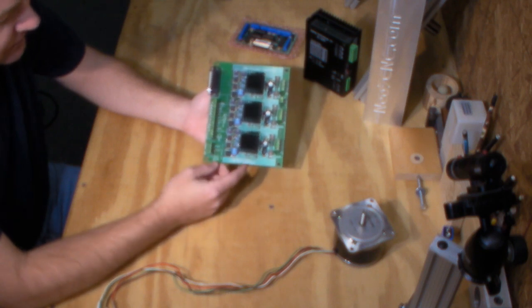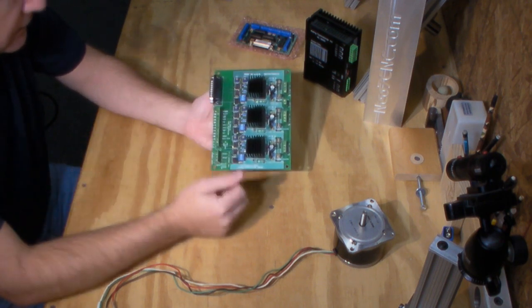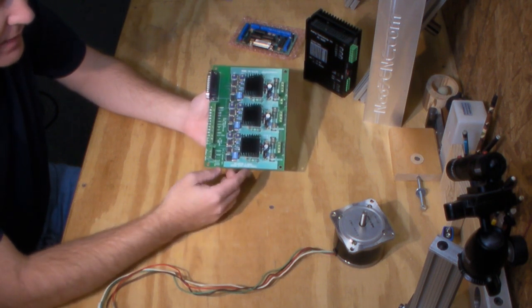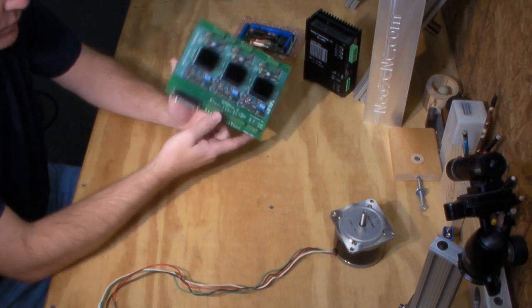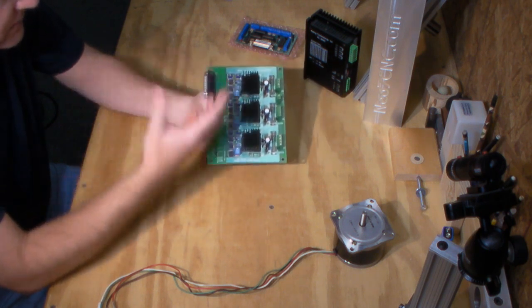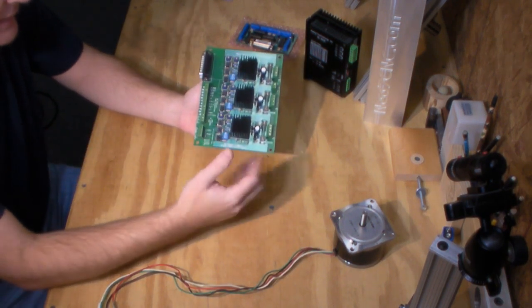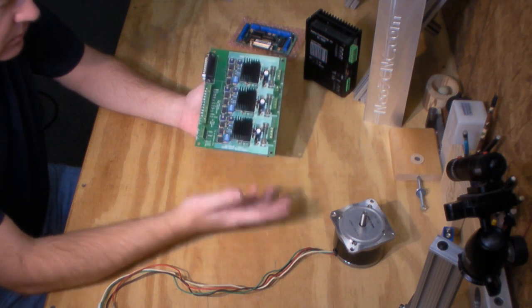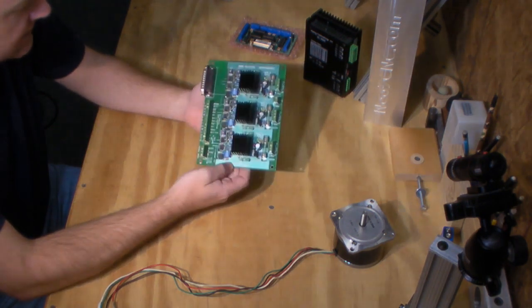It gets its commands from the parallel port on your computer. Typically with Mach, you can't use a laptop to run it because of the power saver features of the parallel port. I'm talking about using a standard PC that has a printer port on it. It connects with this DB25 connector here. By the way that you set your ports and pins inside of Mach 3, that's what sends the instructions to this board. It turns it into the necessary code to tell the stepper motor what to do, the pulse and direction and whatnot.